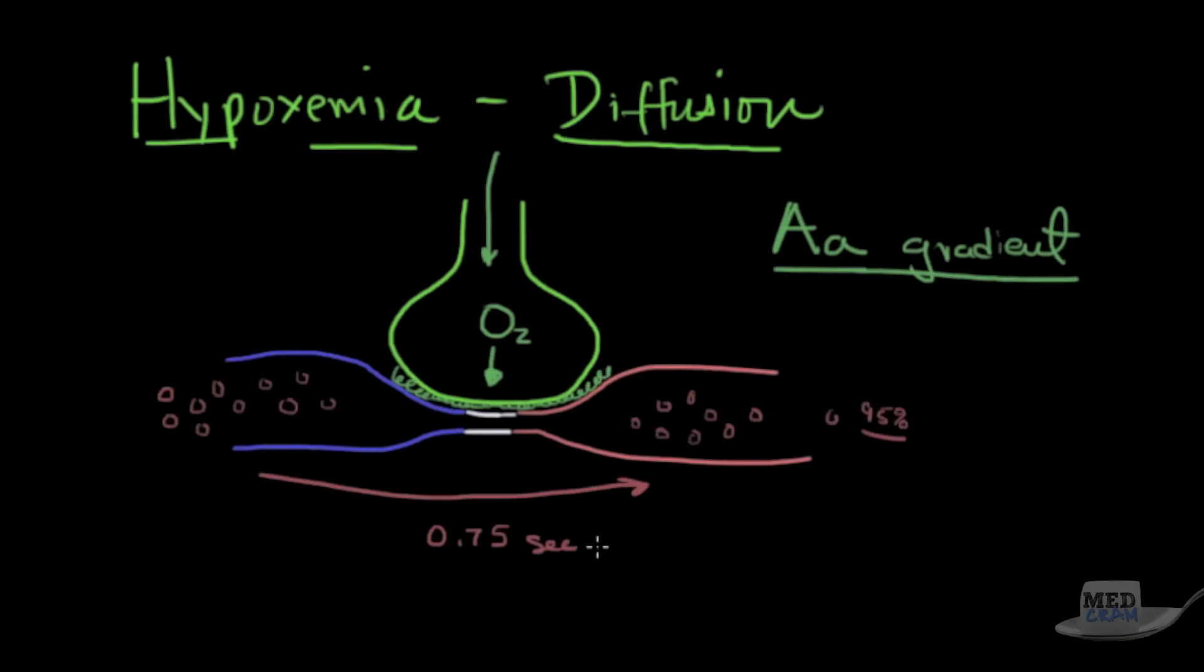However, when they start to exercise, cardiac output goes up and even though there are parallel systems that the blood can go through, the velocity of these red blood cells increase. Therefore, 0.75 seconds goes down. It's going through, it's equilibrating and it pops out when they're exercising before there's full equilibration. Now maybe instead of 95% saturated, it's only 85% saturated.